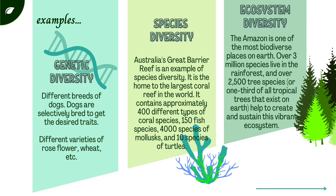Examples of genetic diversity: different breeds of dogs — dogs are selectively bred to get desired traits — and different varieties of rose flower, wheat, etc. For species diversity, Australia's Great Barrier Reef is an example. It is home to the largest coral reef in the world, containing approximately 400 different types of coral species, 150 fish species, 4,000 species of mollusks, and 10 species of turtles.